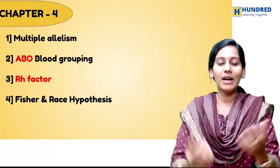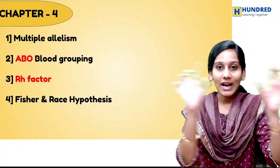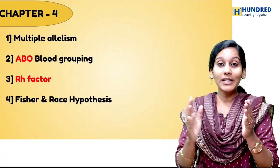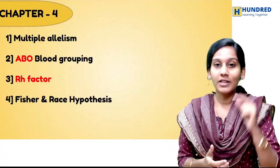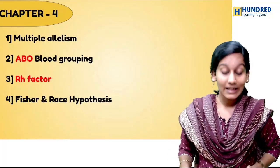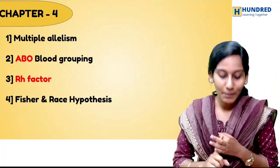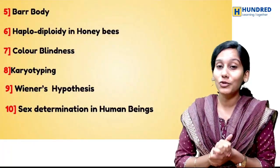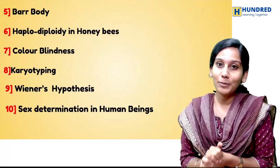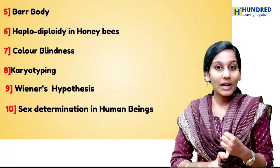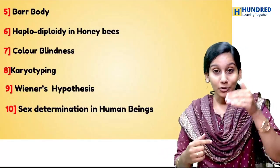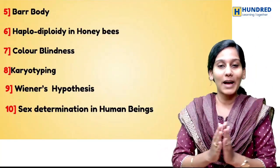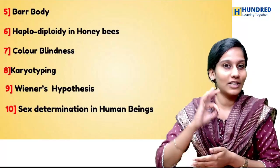We will talk about what is affected — normal female. On those conditions, how do we answer the question? You can easily solve it. The questions we cover first: multiple allelism and the ABO blood grouping system — we will talk about this in table form. And RH factor, Fisher and Race's hypothesis. Barr bodies are super important topics. Haplodiploidy in honeybees — we will talk about sex determination in honeybees. In another part of the question, we will talk about kin selection. If you read the whole paragraph, you will definitely score 3 marks.